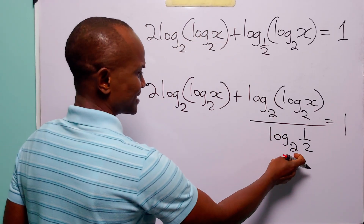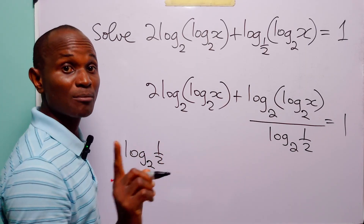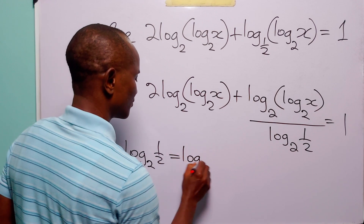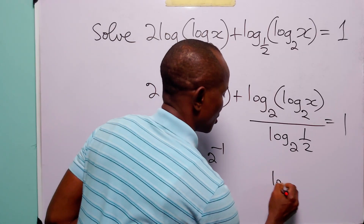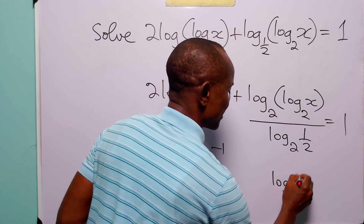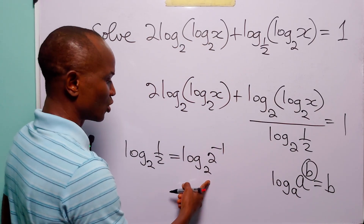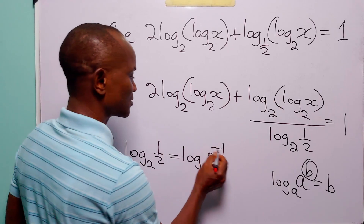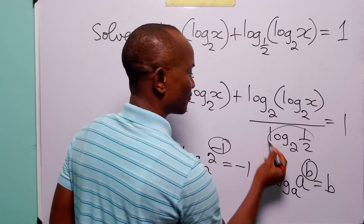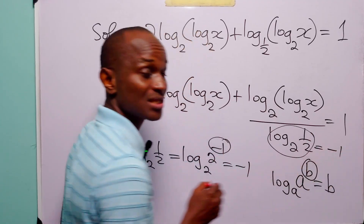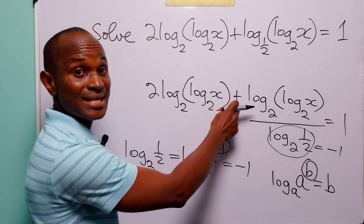Now let us look at this denominator. We have log base 2 of one-half. Remember that we can write one-half as 2 to the power of minus 1. And remember that log base a of a to the power b is equal to b. So log base 2 of 2 to the power minus 1 is equal to minus 1. That means that in this denominator we simply have minus 1.